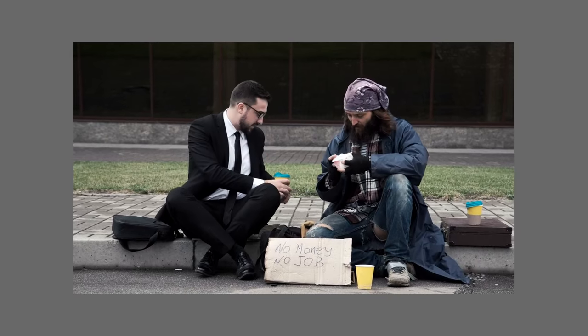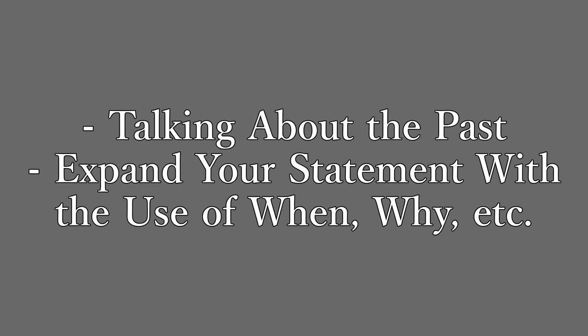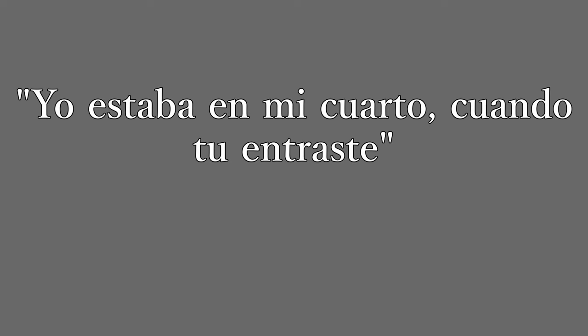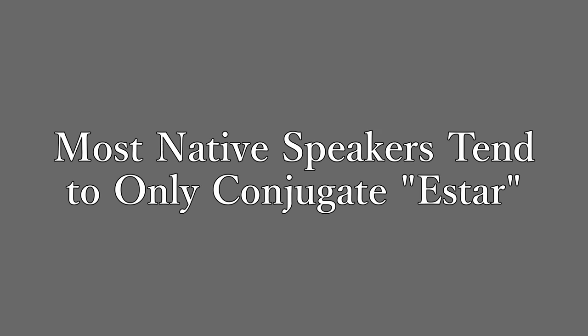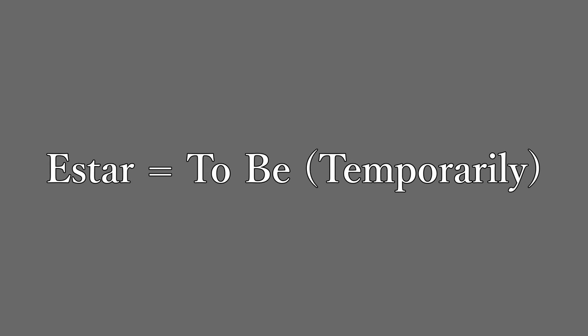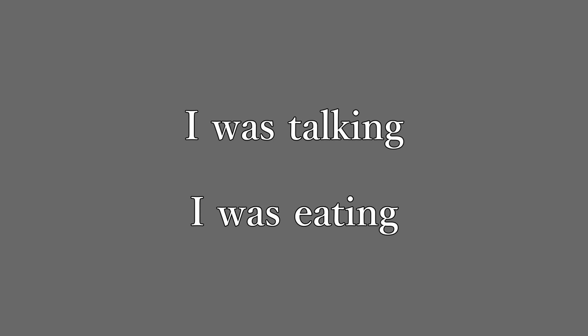So how do we use the preterite and the imperfect together? When you're talking about the past and expand what you're saying using a word such as when, why, because, how, etc., you need to use both. An example: yo estaba en mi cuarto cuando tú entraste — I was in my room when you came in. As you can see, with the word cuando (when), we conjugate the second verb in the preterite instead of keeping it in the imperfect. Also, instead of conjugating each verb individually, most native speakers conjugate estar in the imperfect and use the gerund — for example, yo estaba hablando, yo estaba comiendo — so make sure to remember this native tip.